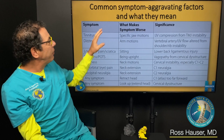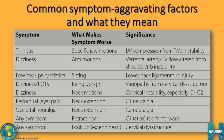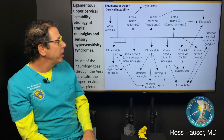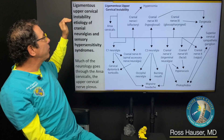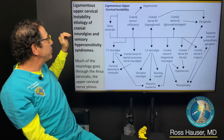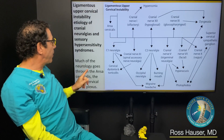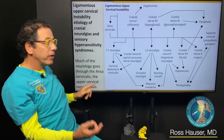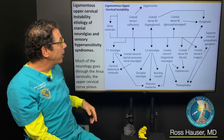These are different motions that cause different symptoms. You'll see that sometimes neck extension or mandibular protrusion can increase the symptoms of occipital neuralgia. This is a detailed reference to ligamentous upper cervical instability as the etiology of cranial neuralgias and sensory hypersensitivity syndromes. Much of the neurology goes through the ansa cervicalis — that's the cervical plexus, the upper cervical nerve plexus.